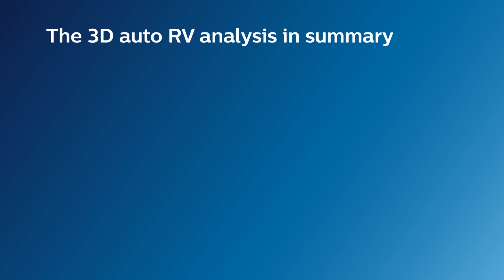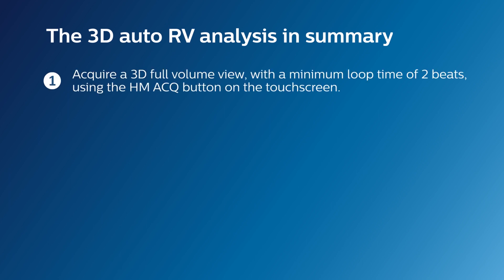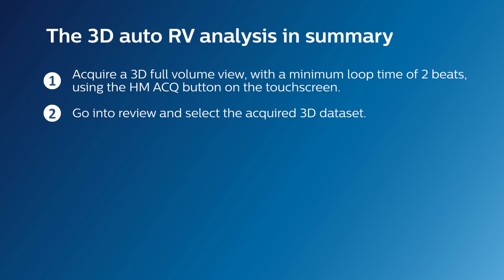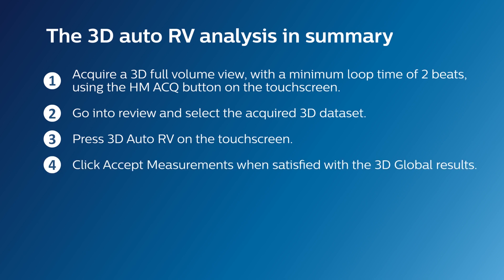Summarizing the 3D AutoRV analysis: use the HMACQ button on the touch panel to acquire an RV-focused 3D full volume with a minimum loop length of 2 beats. Go into Review and select the acquired 3D dataset. Press 3D AutoRV on the touch screen. Click Accept measurements when satisfied with the 3D global results.